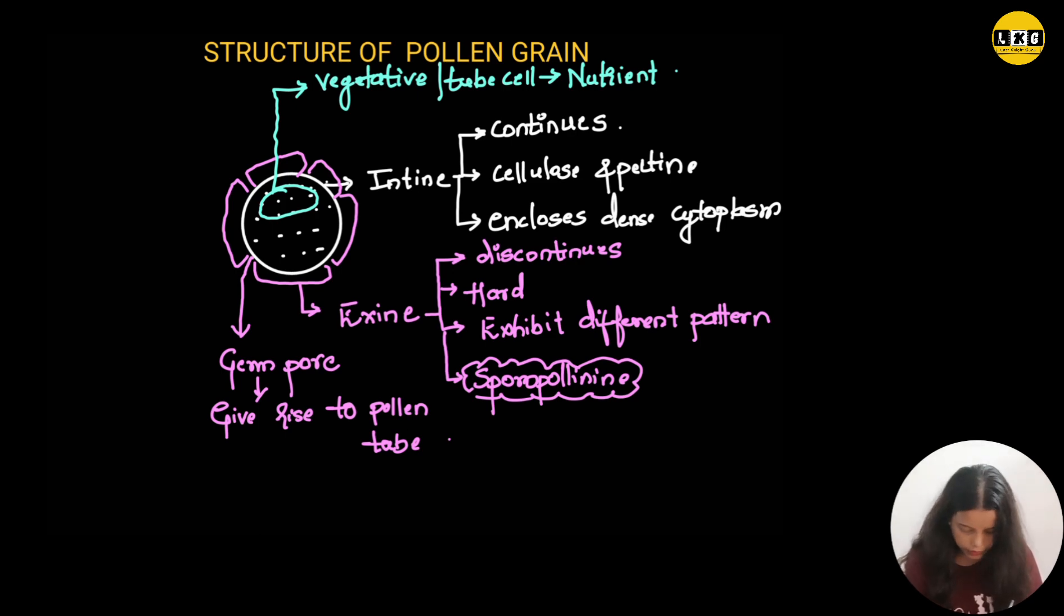Next, there is a smaller cell which is spindle shape and this smaller cell is known as generative cell. The generative cell, as the name suggests, it will undergo mitosis and give rise to two male gametes. The vegetative cell provides nutrients to the developing male gamete, whereas the generative cell will give rise to two male gametes.